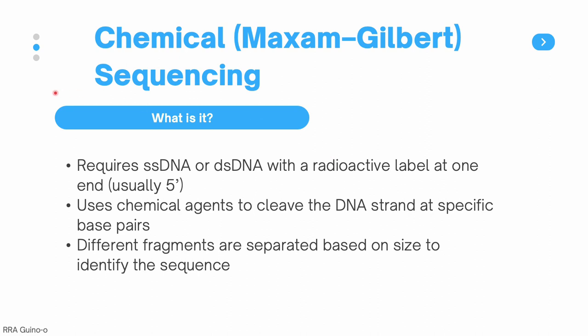The first type of sequencing we have is called chemical sequencing or Maxam-Gilbert sequencing. This technique requires single-stranded DNA or double-stranded DNA with a radioactive label at one end, usually the five prime end. This type of sequencing is called chemical sequencing because it uses chemical agents to cleave DNA at specific base pairs. Different fragments are then separated based on size to identify the sequence.